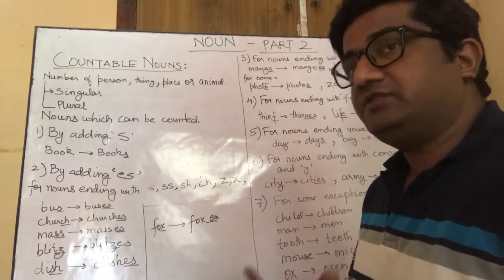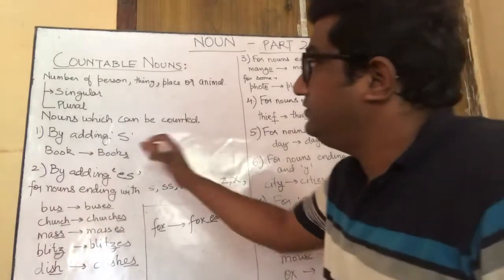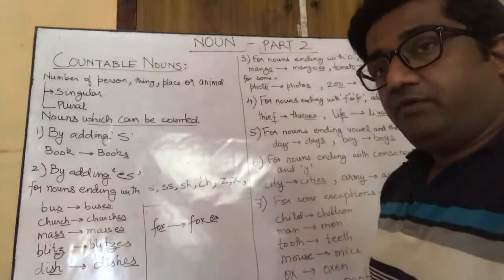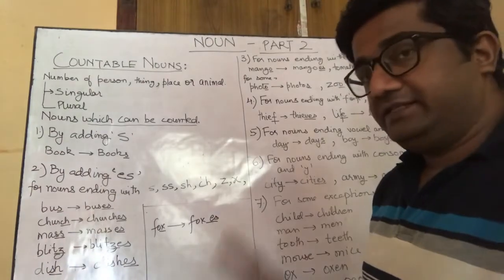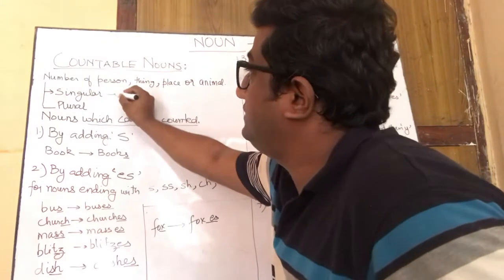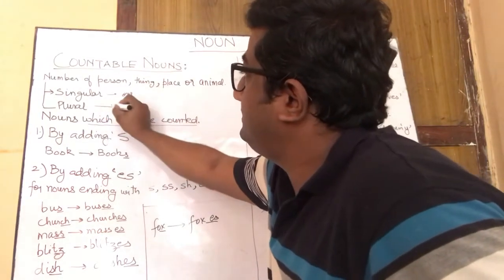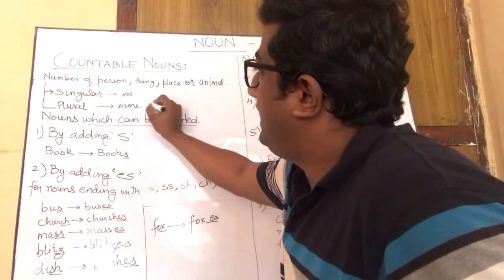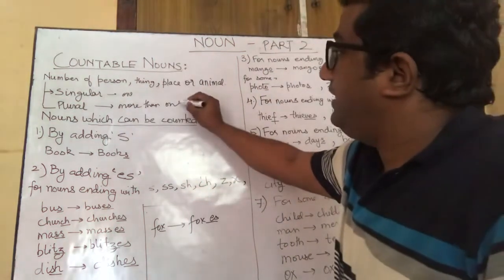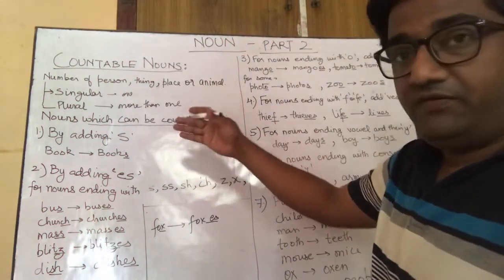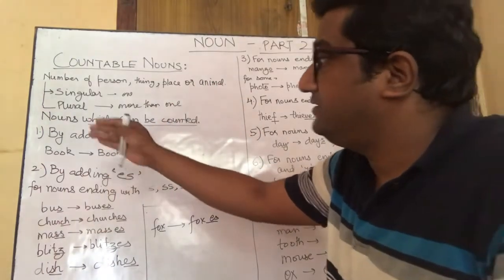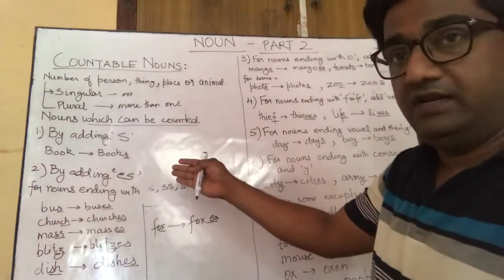Countable nouns, as the name suggests, are those nouns which can be counted. Depending upon the count, whether it is just one or more than one — which we call singular or plural — we can change a singular noun into a plural noun. Singular means one, plural means more than one.